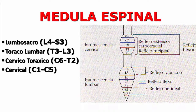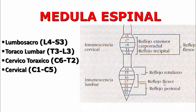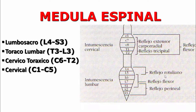El reflejo flexor del miembro pélvico, también llamado reflejo de retirada, viene de la lumbar 6 al sacro 1. Con una gentil presión tendremos una flexión del miembro. Para el rotuliano, golpeamos con un martillo neurológico el ligamento patelar y el miembro se extenderá. Y por último, el reflejo perineal, que se puede hacer con una gentil presión o con una pinza alrededor del ano y este se contraerá.